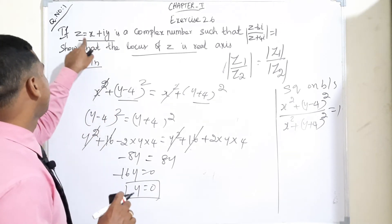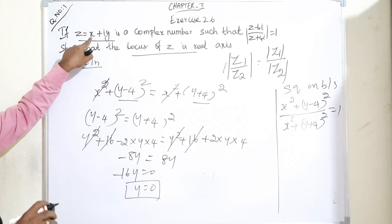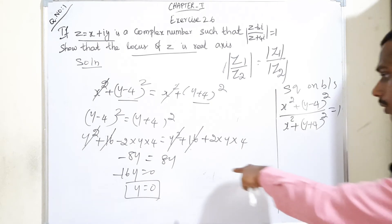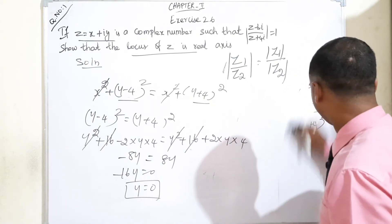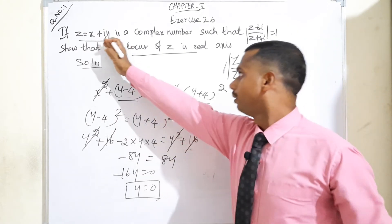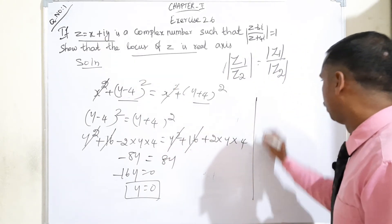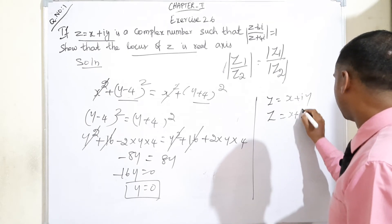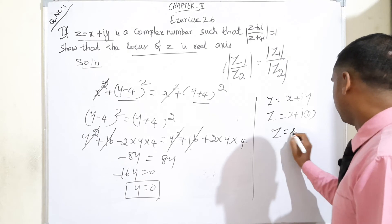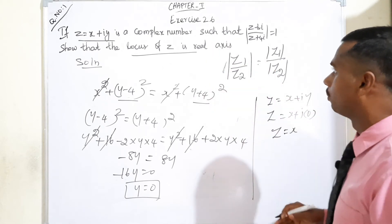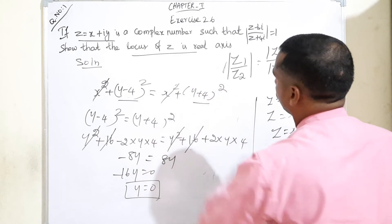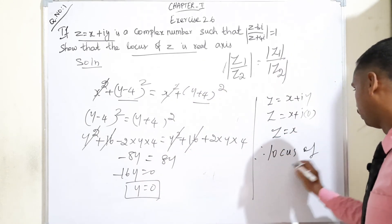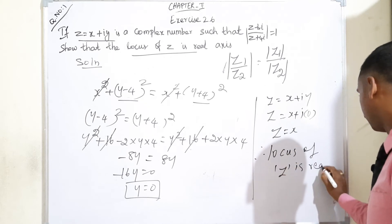If y is equal to 0, and z is equal to x plus i y, then replacing y with 0 gives z is equal to x plus i times 0, which means z equals x. Therefore, the locus of z is the real axis.